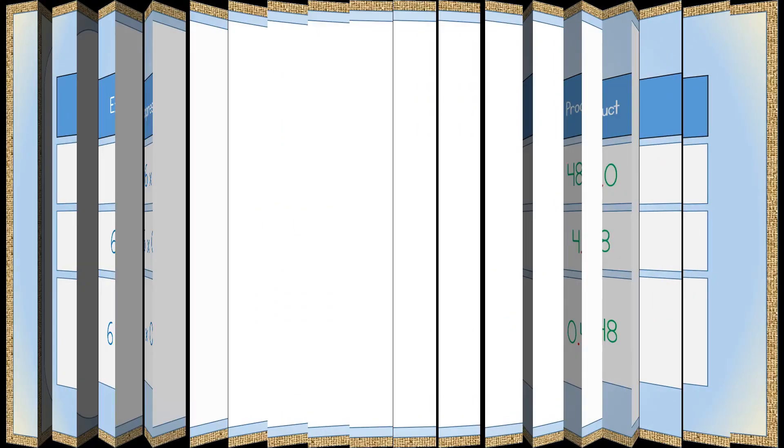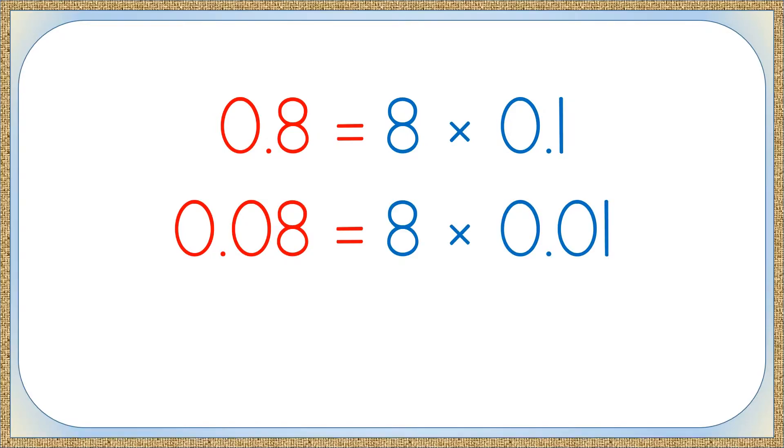And finally, take a look at this. 8 tenths equals, or can be broken apart into 8 times 1 tenths, right? Following this same pattern, similarly, a hundredths decimal, such as 8 hundredths, can be broken apart as 8 times 1 hundredth. And also, 1 hundredth can be further broken apart as 1 tenths times 1 tenths.